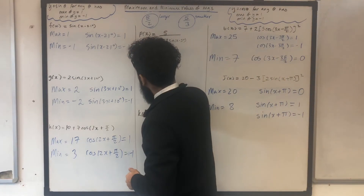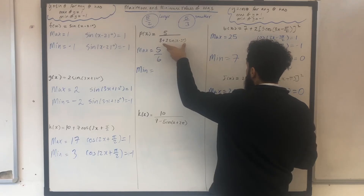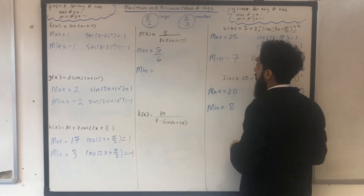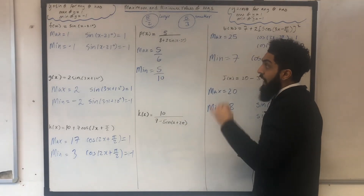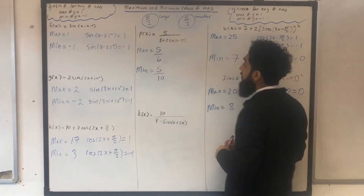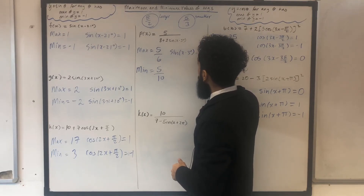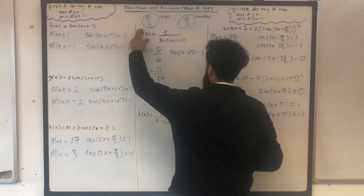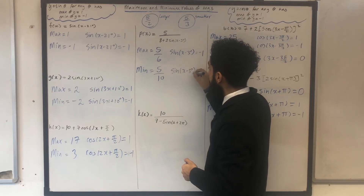Now I want to work out the minimum of p of x. To minimize p of x, I need to maximize the denominator by maximizing the sine, so I replace sine with 1. I get 5 over 8 plus 2 times 1, which is 5 over 10. In the exam, I could be asked for the smallest positive value of x for which p of x has a maximum of 5 over 6 — I need to solve sine in bracket x minus 3 degrees equal to minus 1. For the minimum of 5 over 10, I need to solve sine in bracket x minus 3 degrees equal to 1.